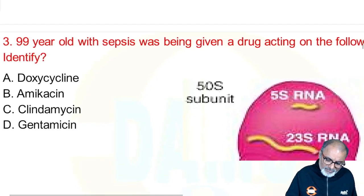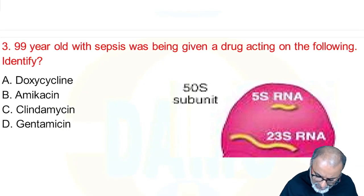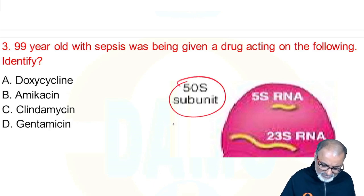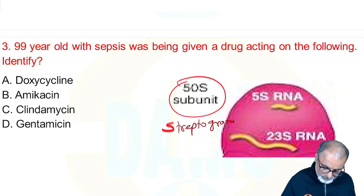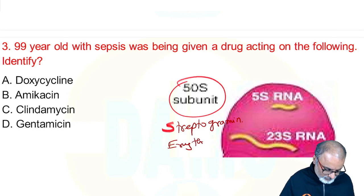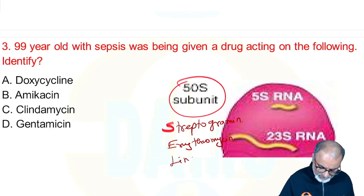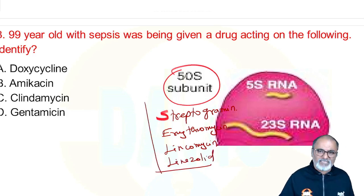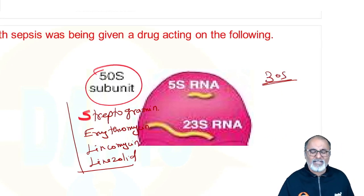A 99-year-old with sepsis being given a drug acting on the 50s ribosomal subunit. The mnemonic is CELL: Chloramphenicol, Erythromycin (macrolides), Linezolid, and Lincosamides (clindamycin), Streptogramins — all act on the 50s subunit.